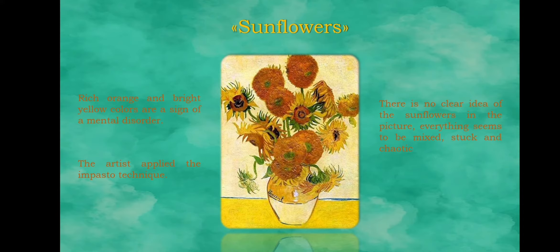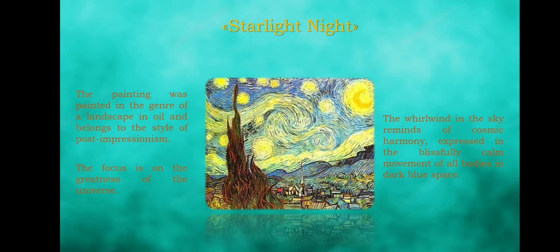There is no clear idea of the sunflowers in the picture. Everything seems to be mixed, stuck and chaotic. Sunflowers is a kind of swirling composition depicting sunflower flowers. The painting was created in the genre of still life in oil and belongs to the style of post-impressionism.